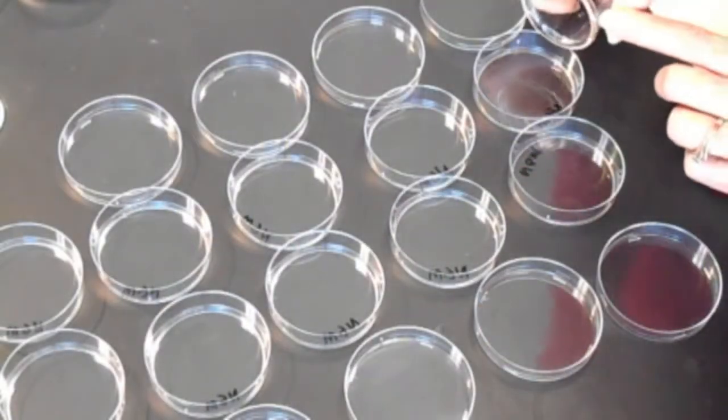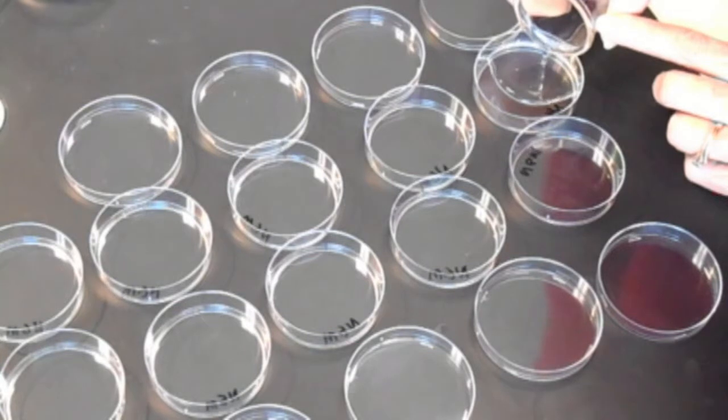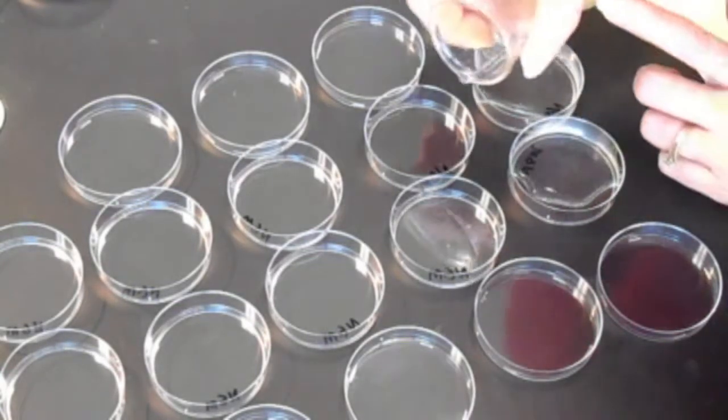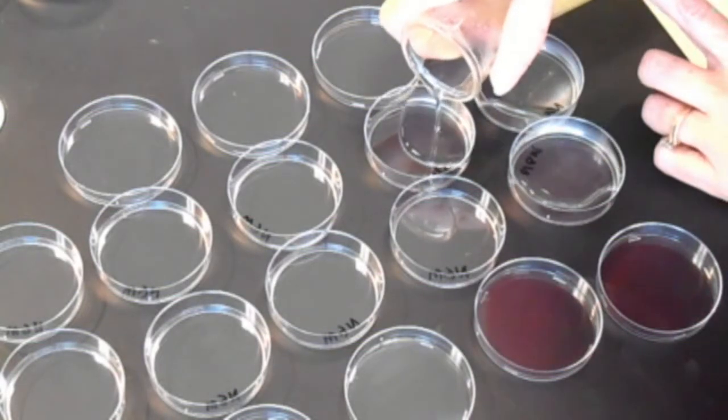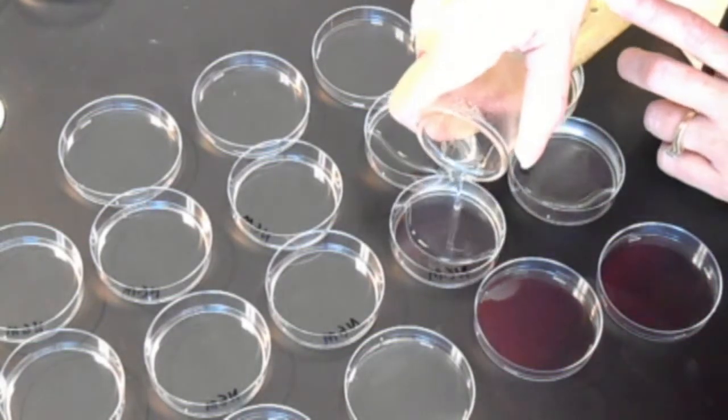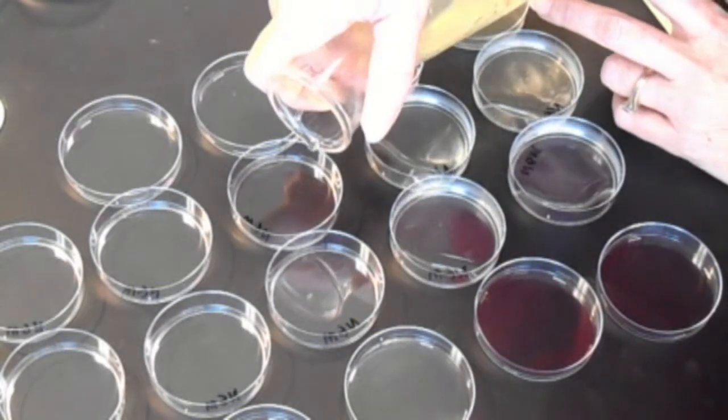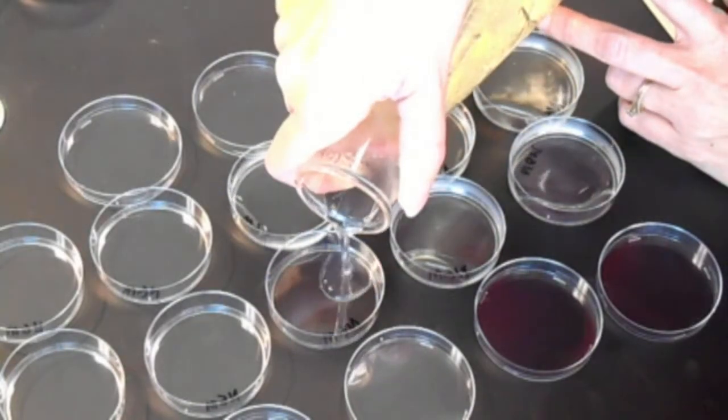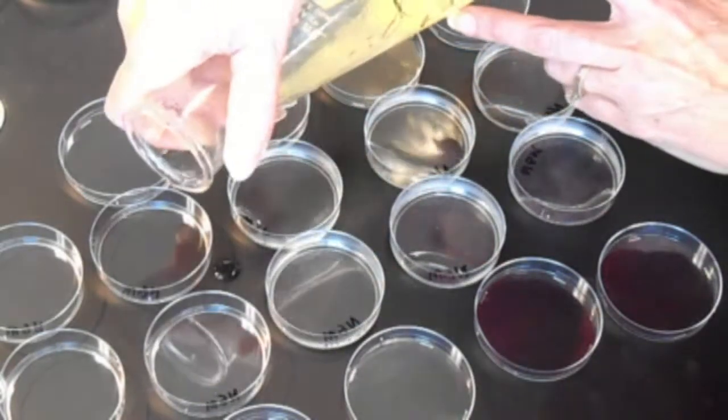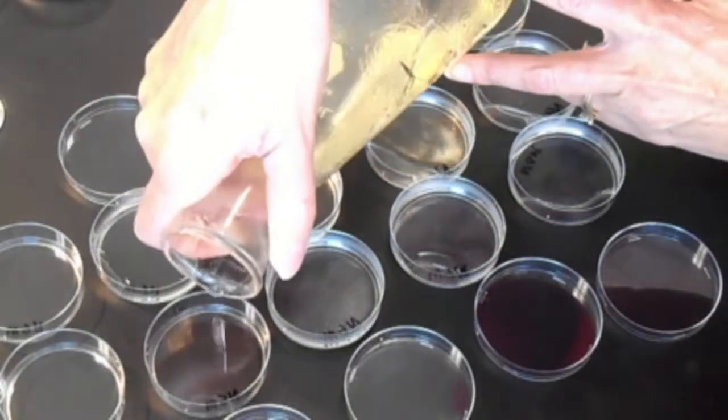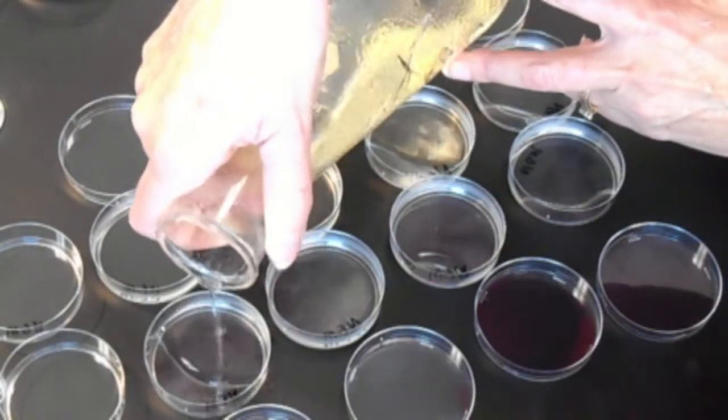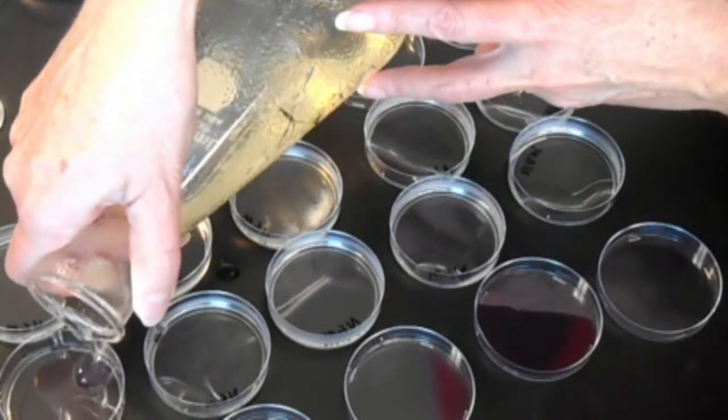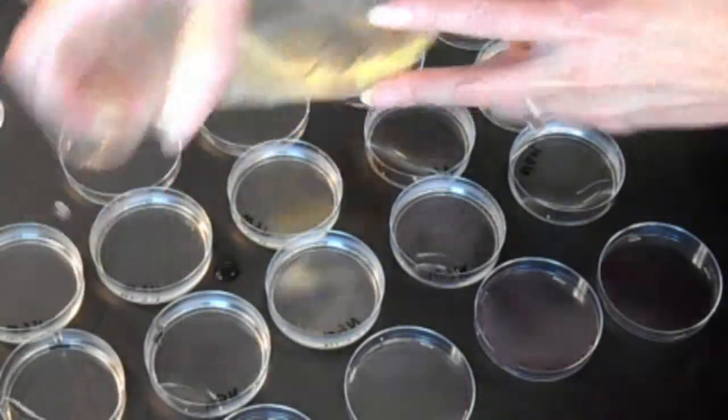And initially, you can be very diligent and measure out 10 milliliters of agar and make sure you have the right amount. When you get good, after you've done hundreds, maybe thousands of plates, you can kind of eyeball it. So my rule of thumb is when it just about covers the bottom, I stop. And they're not exact, but they're certainly close enough. And so you can see how pretty efficiently you can pour a row of 10.